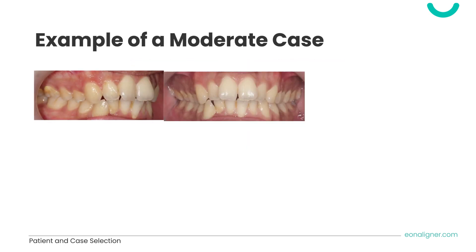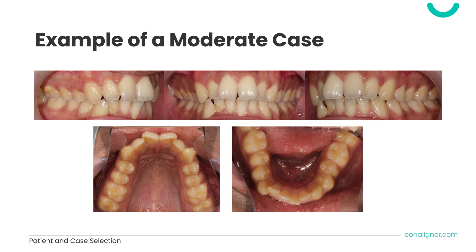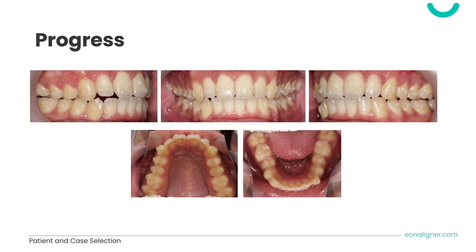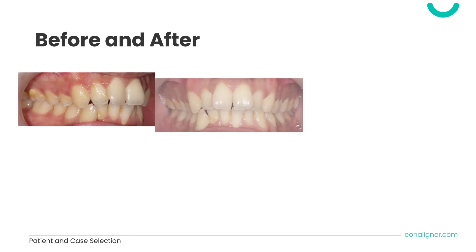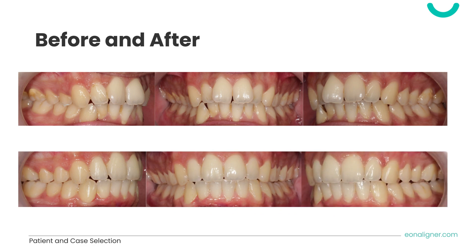This is an example of a case moderate in severity, showcasing moderate crowding with some difficult rotations of the teeth. Observe the progression of the case. Here are the before and after photos — the crowding was resolved and the rotations were corrected.